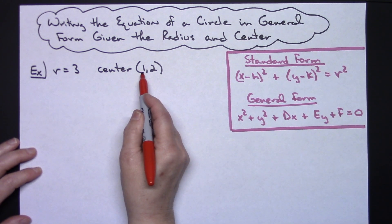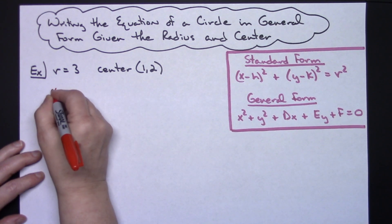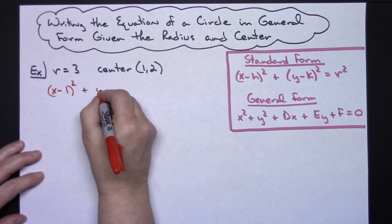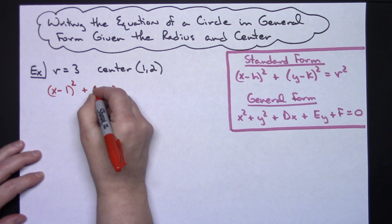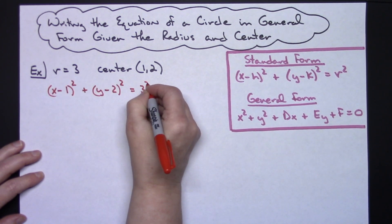My h is going to be the negative 1. My k there is going to be a negative 2. So I'm going to have x minus 1 quantity squared plus, following that formula, y minus 2 quantity squared is equal to the radius squared.